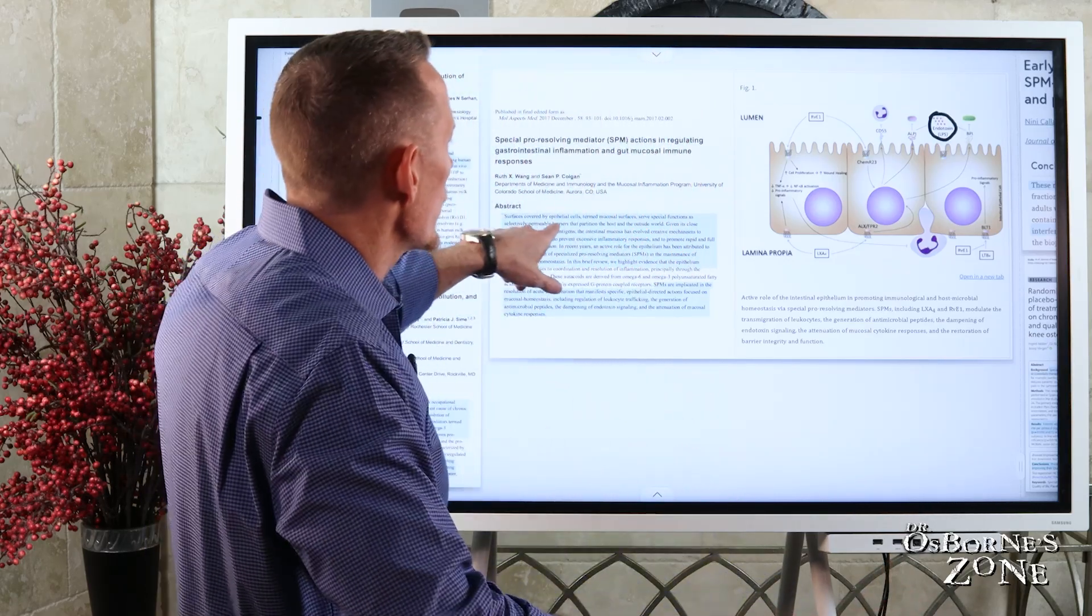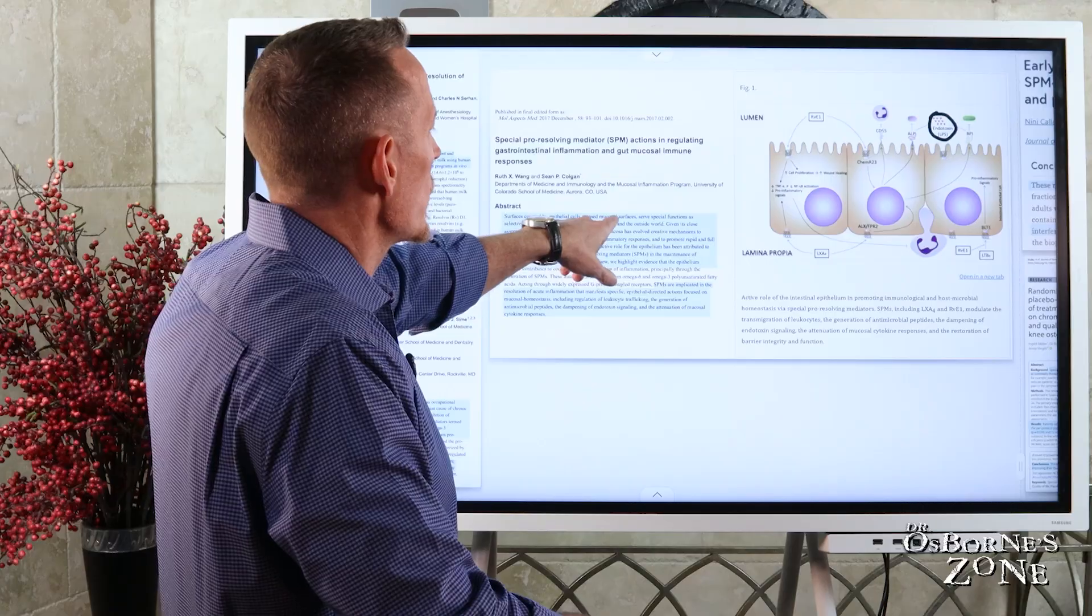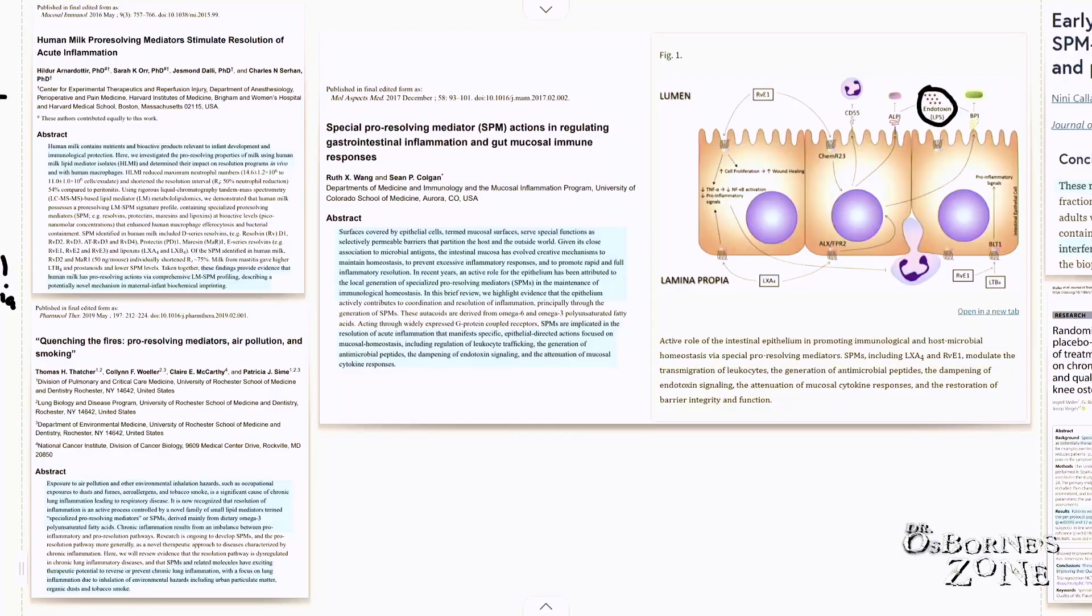You can see here, surfaces covered by epithelial cells termed mucosal surfaces, and we have these in our gut. We have mucosal surfaces in our sinuses, serve special functions as selectively permeable barriers that partition the host and the outside world, meaning these are quarantine zones. Given its close association to microbial antigens or bacterial toxins, the intestinal mucosa has evolved creative mechanisms to maintain balance or homeostasis to prevent excessive inflammatory responses and to promote rapid and full inflammation resolution.